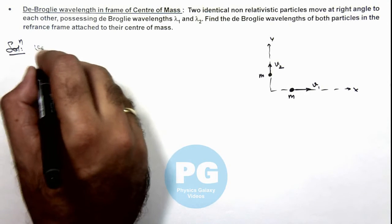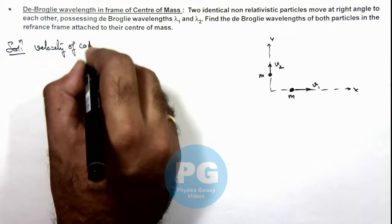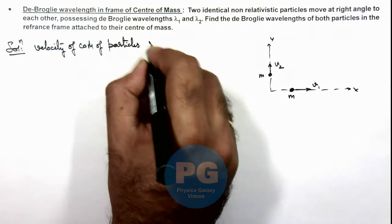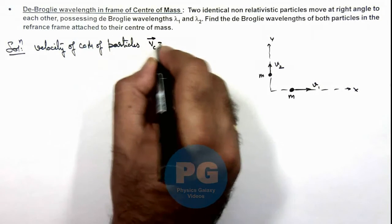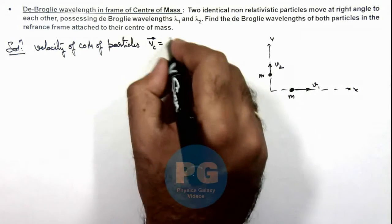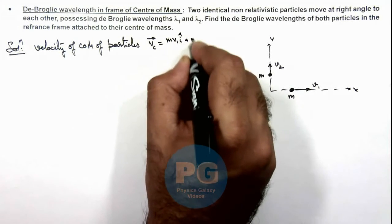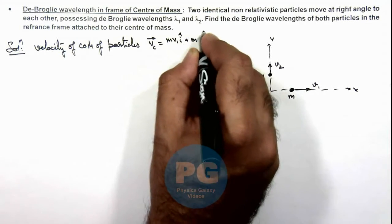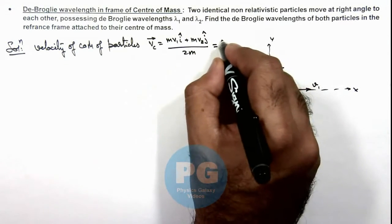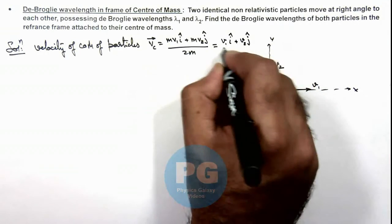We calculate the velocity of the center of mass of the particles. This is given by v_c = (m1*v1 + m2*v2) / (m1 + m2). Substituting, this gives us (m*v1*i-cap + m*v2*j-cap) divided by 2m, so the velocity of the center of mass is (v1*i-cap + v2*j-cap) / 2.